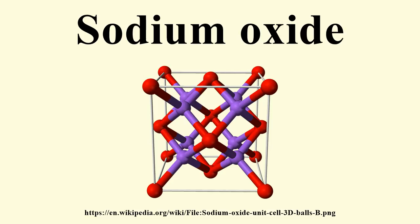It is the base anhydride of sodium hydroxide, so when water is added to sodium oxide, NaOH is produced. Na2O plus H2O yields 2 NaOH. The alkali metal oxides M2O crystallize in the antifluorite structure.